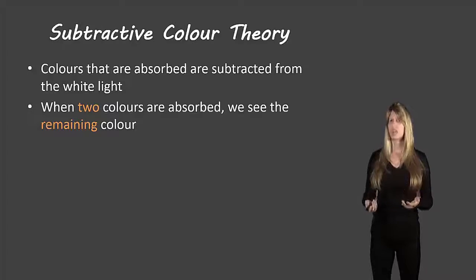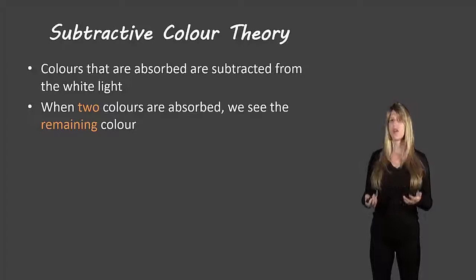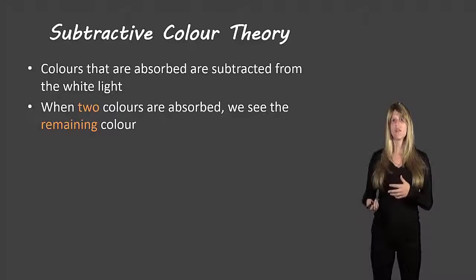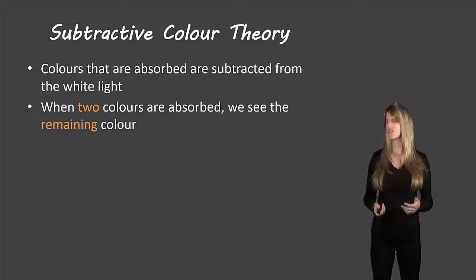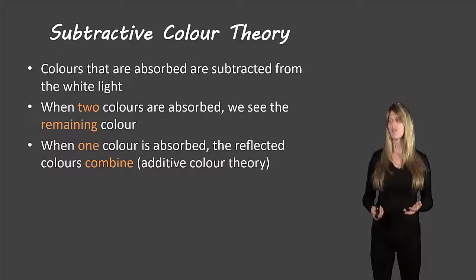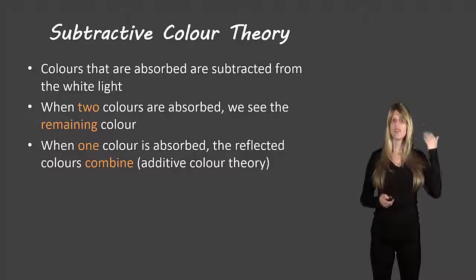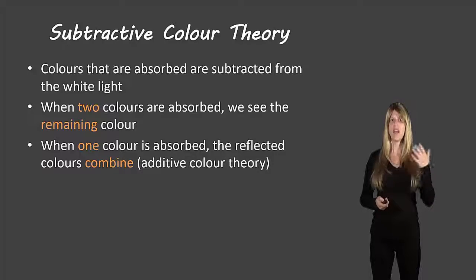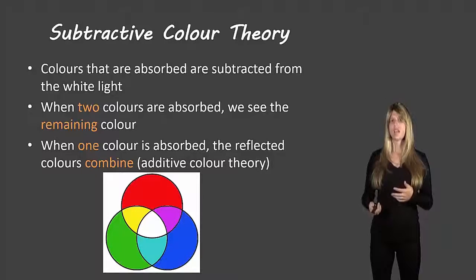Colors that are absorbed and subtracted from white light are part of the subtractive color theory. Whether colors are absorbed affects whether we see an object as a certain color. When two colors are absorbed, we see the remaining color. When one color is absorbed, the other two combine using the Venn diagram from additive color theory. Here's that Venn diagram we use to figure out which colors we'll see.